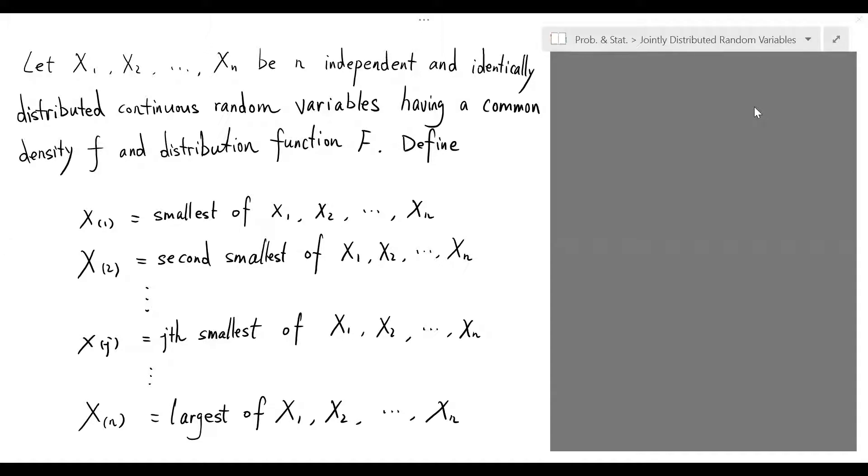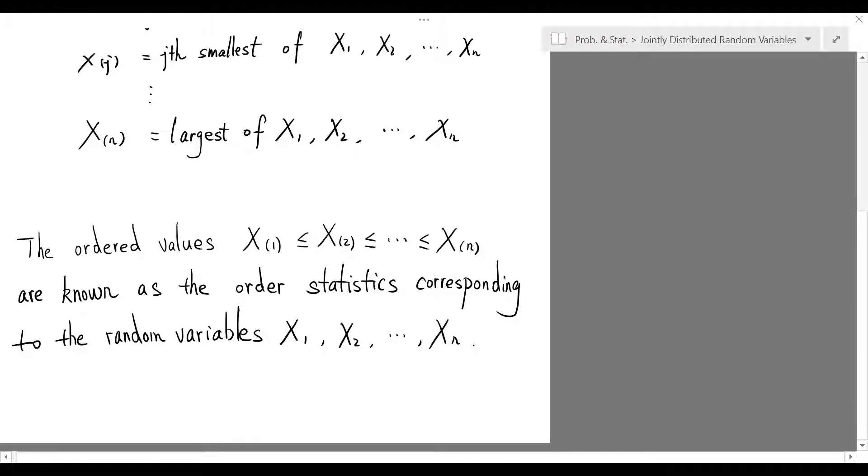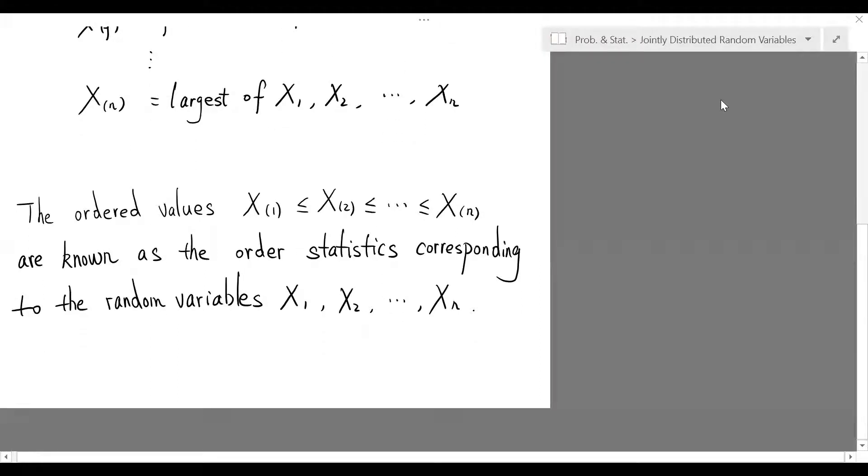Capital X sub n is the largest of these n random variables. Then, these n newly defined random variables are known as the order statistics corresponding to the random variables X sub 1 all the way to X sub n.